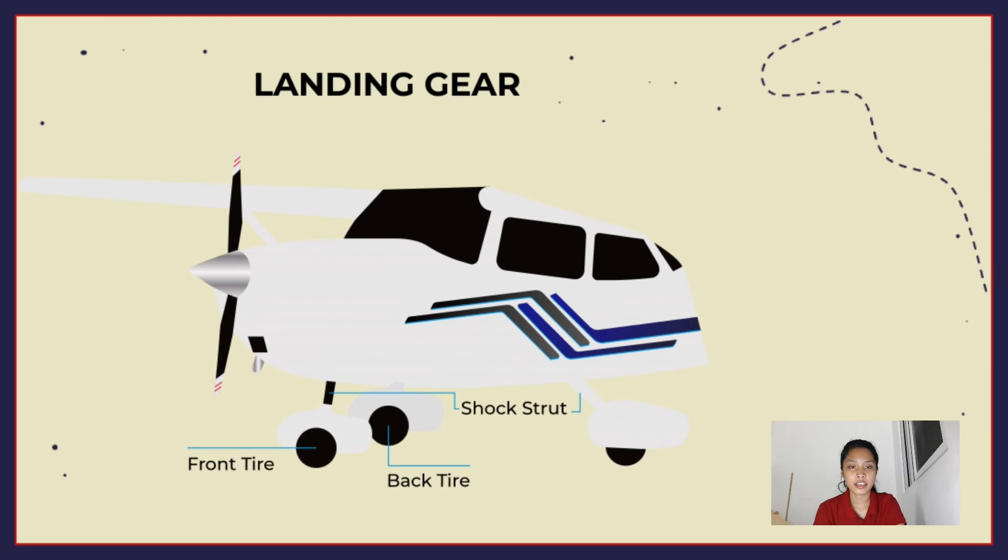The landing gear is the principal support of the airplane when parked, taxiing, taking off, or landing. Wheeled landing gear consists of three wheels, two main wheels, and a third wheel positioned either at the front or rear of the airplane. Landing gear with rear mounted wheel is called conventional landing gear.